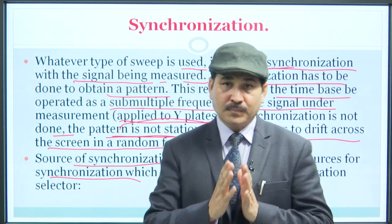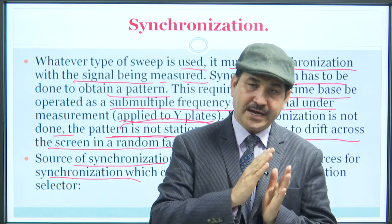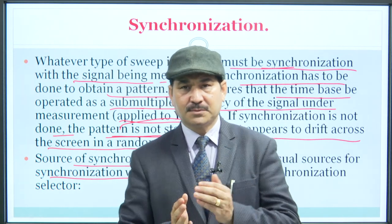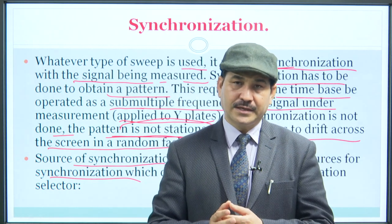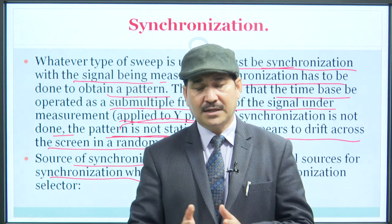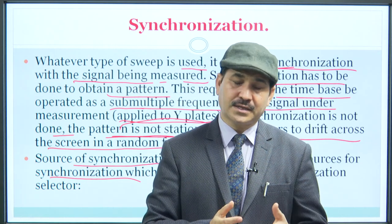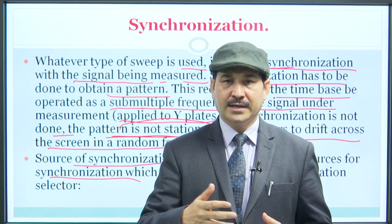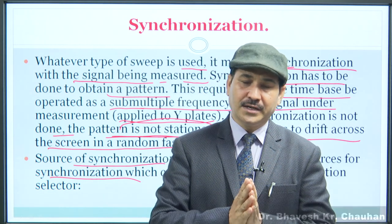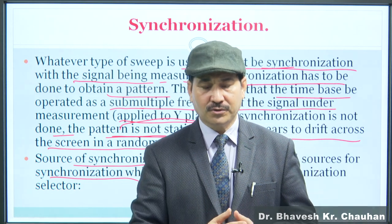As a source of synchronization, there are usually three types of sources. The two primary components are the Y deflection plate, where you apply the input, and the horizontal deflection plate, where you use the time base — these must be coordinated in synchronization. Besides the deflection plates, there are other components including focusing and blanking circuits. There are a number of things for focusing a pattern, which will be discussed in the next lecture. Thank you very much.